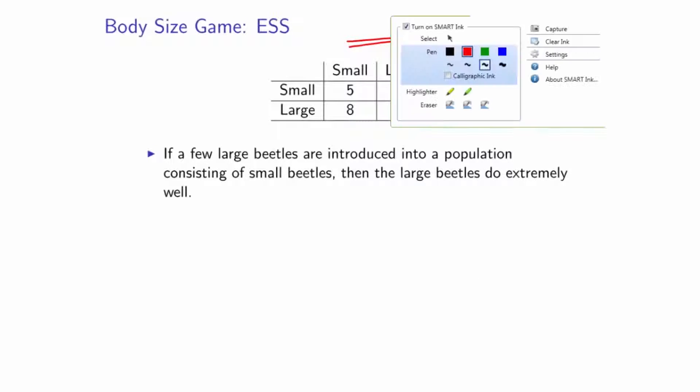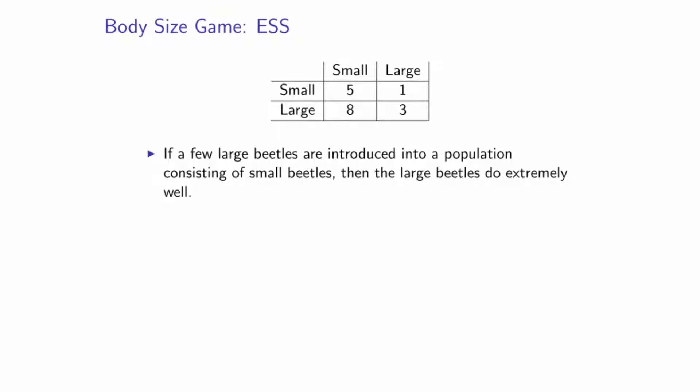Let's consider the example we have been dissecting: the body size in a population of beetles. There were two strategies — phenotypes: small and large. If a few large beetles are introduced into a population of small beetles, then the large beetles will do extremely well. Body size was the main driving factor in pairwise competitions for food — two beetles meeting each other, the bigger one had a better chance of keeping most of the food.